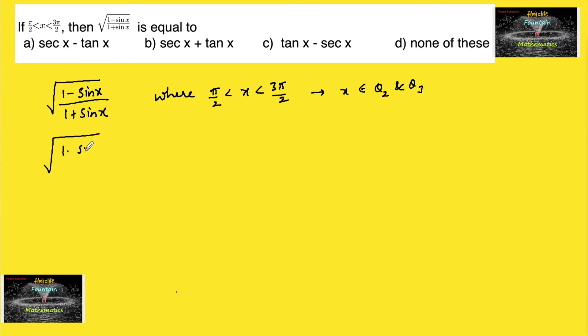So root over 1 minus sin x upon 1 plus sin x. Let's multiply and divide with 1 minus sin x upon 1 minus sin x in the root.